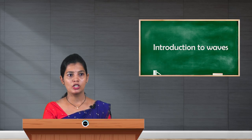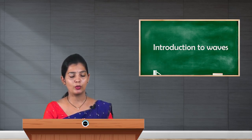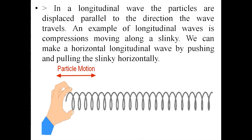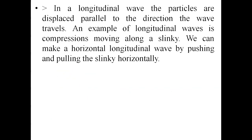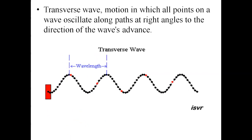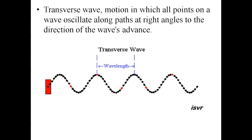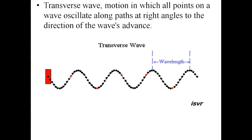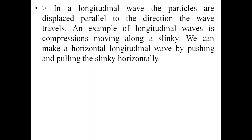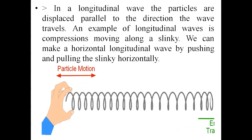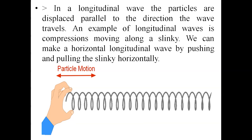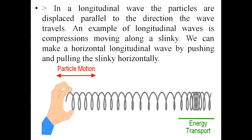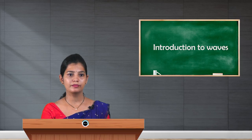To summarize the differences: in a transverse wave, the motion of particles is exactly at right angles to the propagation of the wave. In a longitudinal wave, the energy and compressions travel in the same direction as the propagation of the wave. That is the key difference between the two. Thank you.